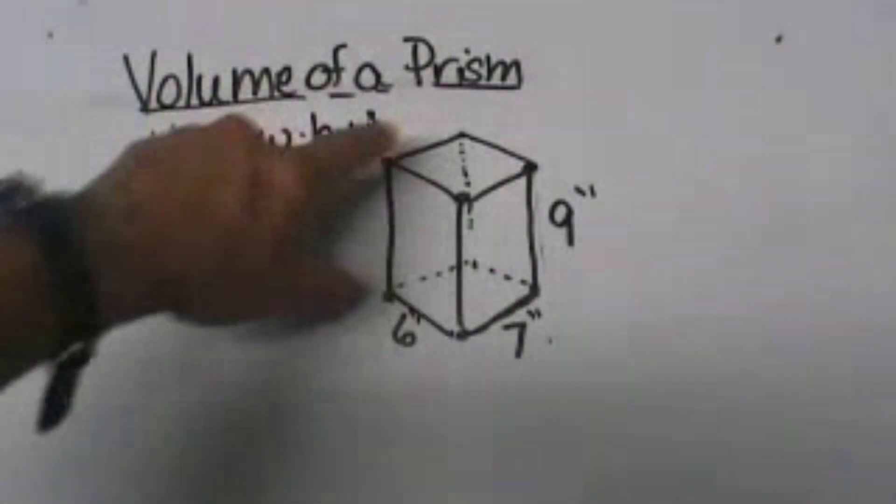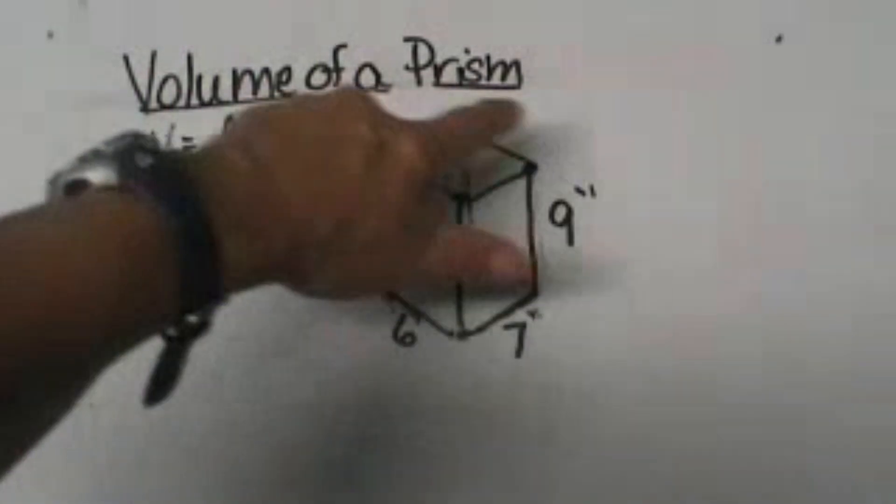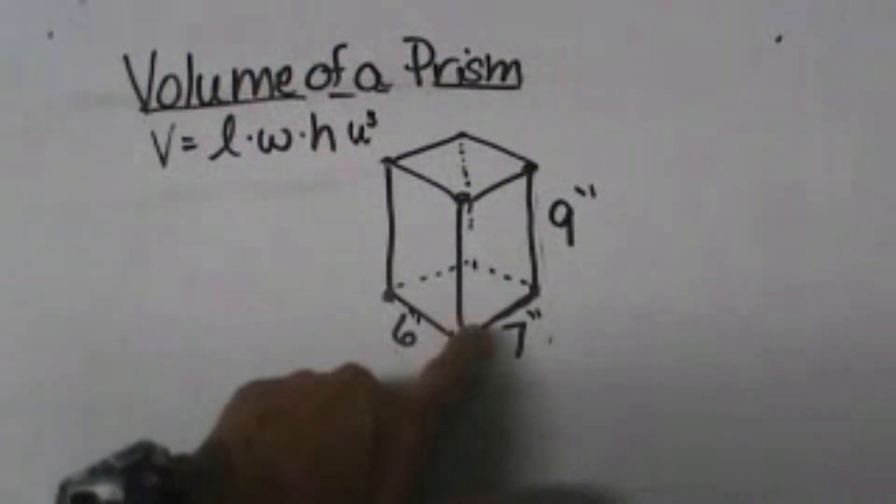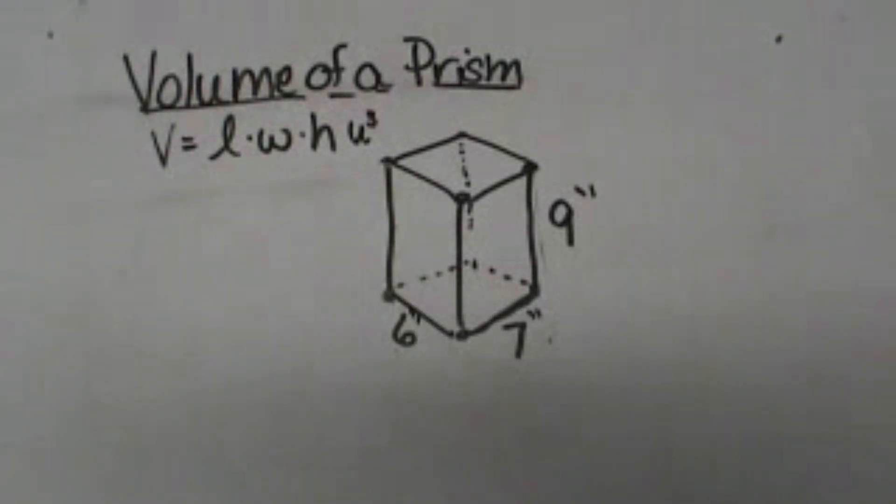On this one we have a rectangular prism because the base is in the shape of a rectangle. It's 6 by 7, so it's not a square base but a rectangular base. Then we have a height of 9.